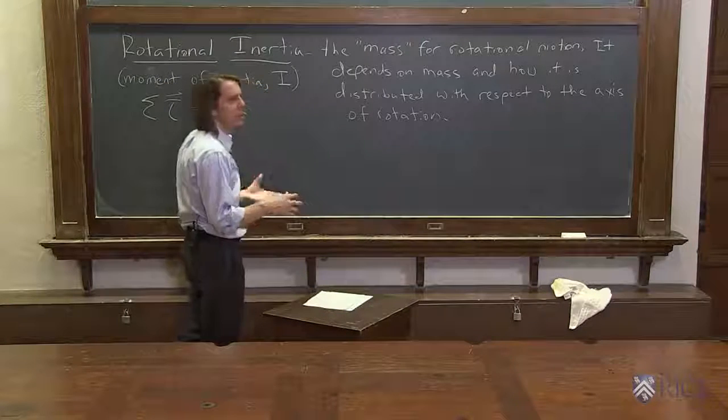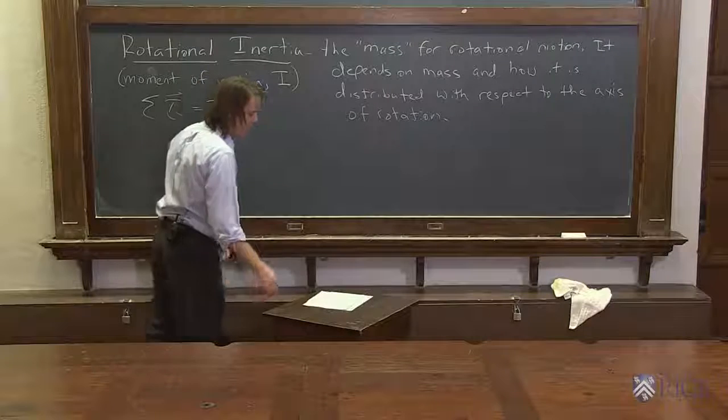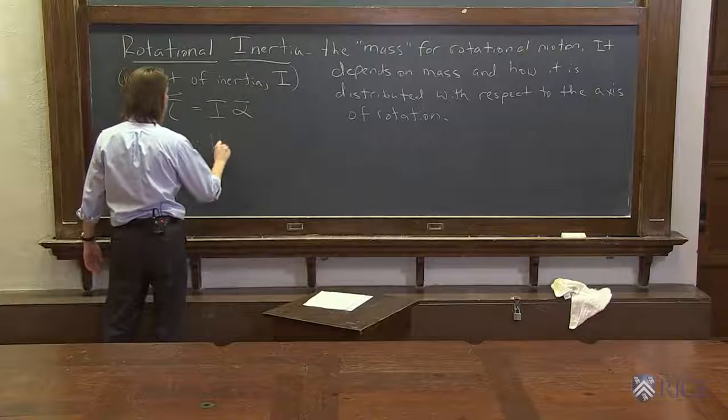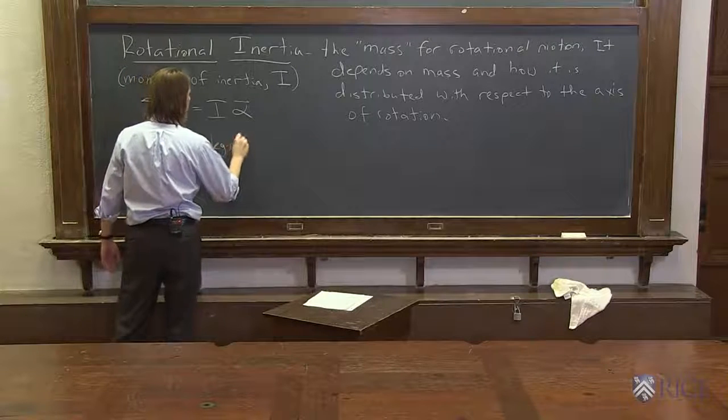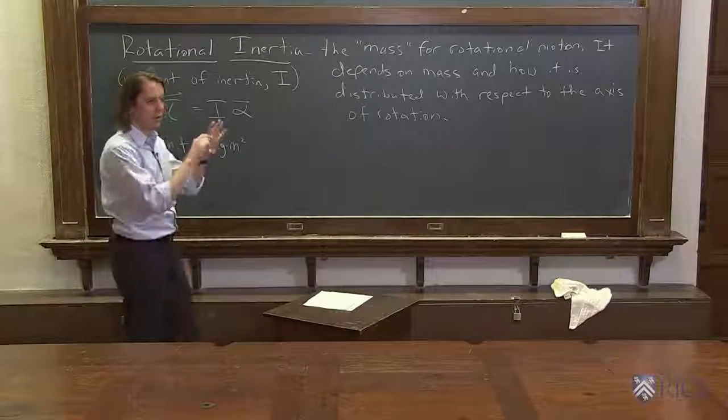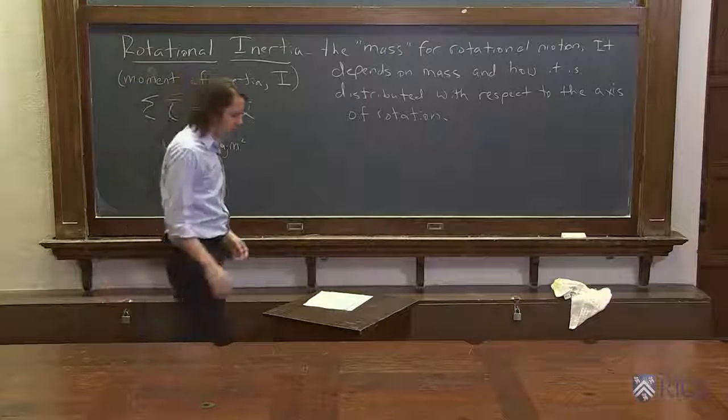It's sort of a property of an object around a certain axis. The unit is kilogram meter squared, because it depends both on the mass and the distance from how the mass is distributed with respect to the axis.